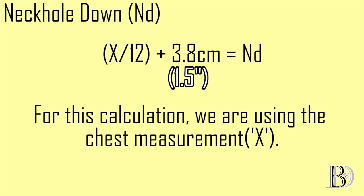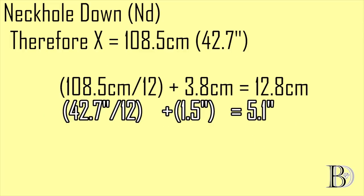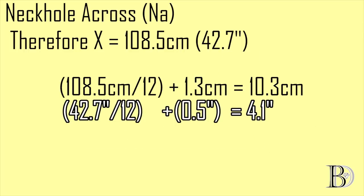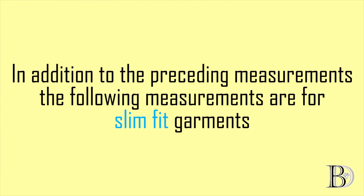The neck hole down measurement is calculated by dividing X by 12 and adding 3.8 cm; substituting our model's X gives us 12.8 cm. The neck hole across measurement is X divided by 12 plus 1.3 cm, giving our model a neck hole across measurement of 10.3 cm.